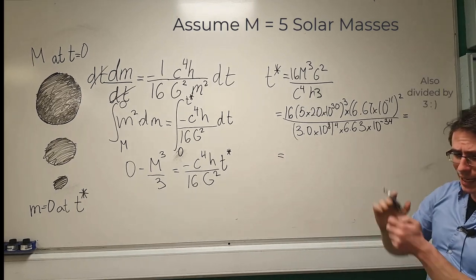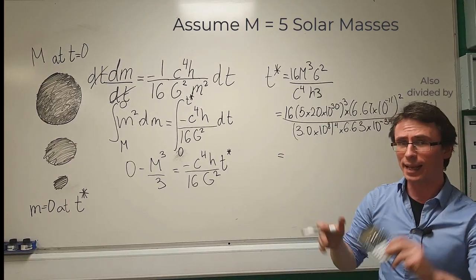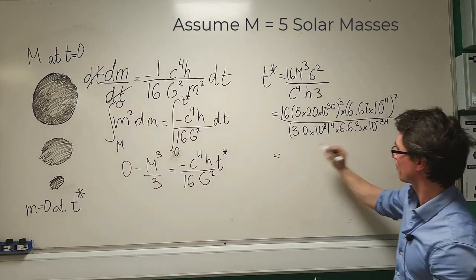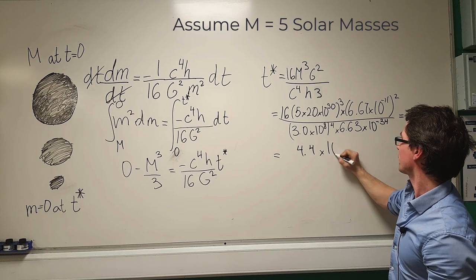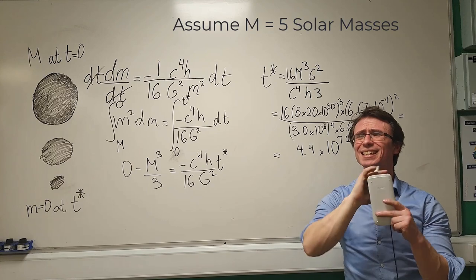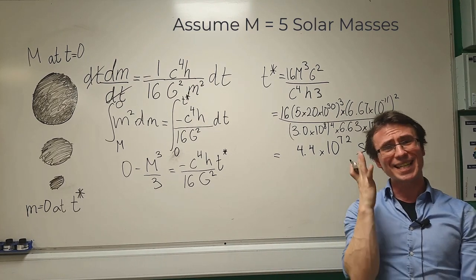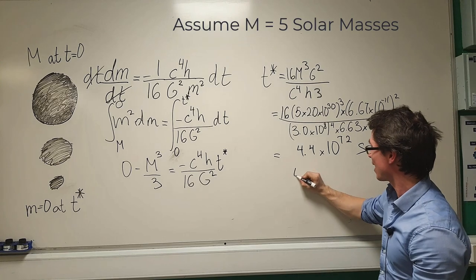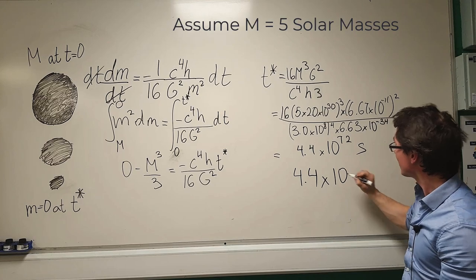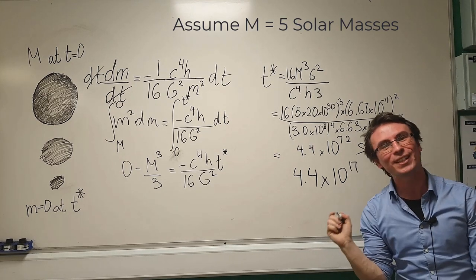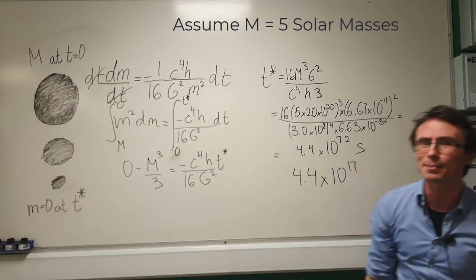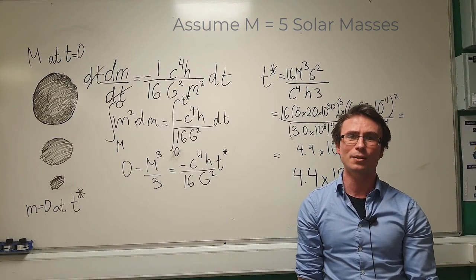Now if we plug this into a scientific calculator we are going to get a humongous number which is about somewhere around 4.4 times 10 to the power of 72 seconds. Now this is such a humongous number, just for comparison the age of the universe is about 4.4 times 10 to the power of 17 which is absolutely amazing. This is this many times greater than the age of the universe.